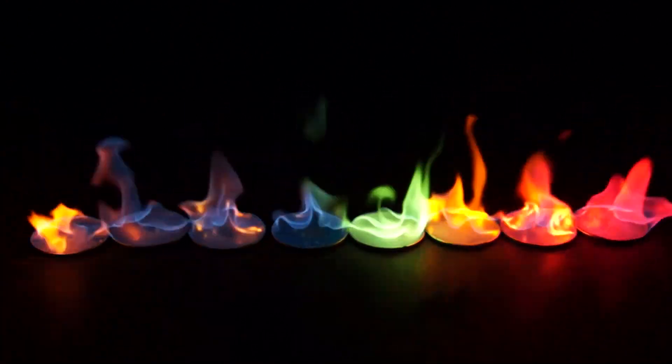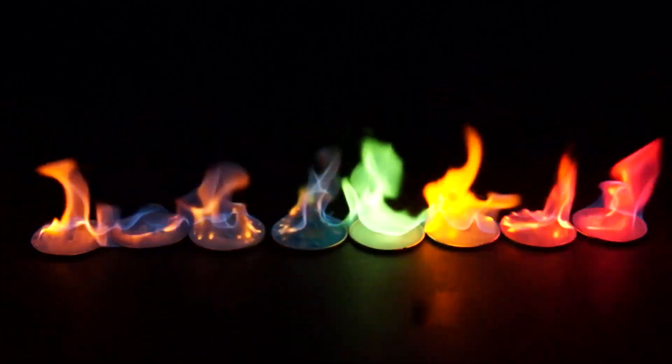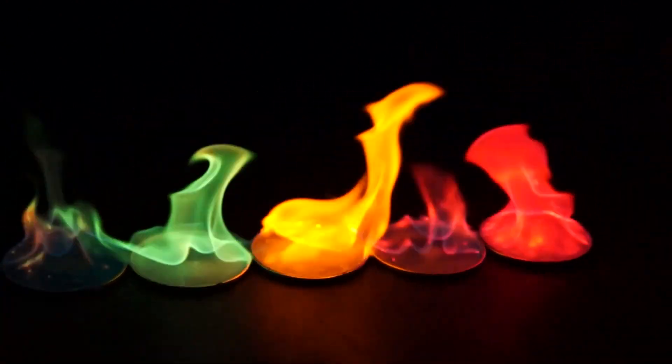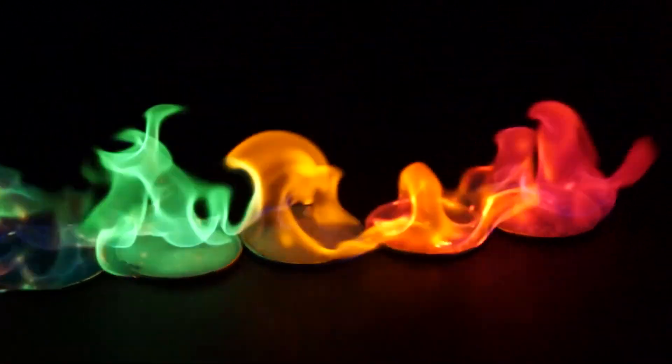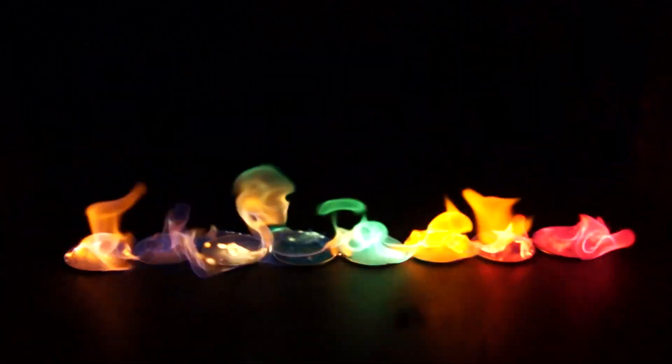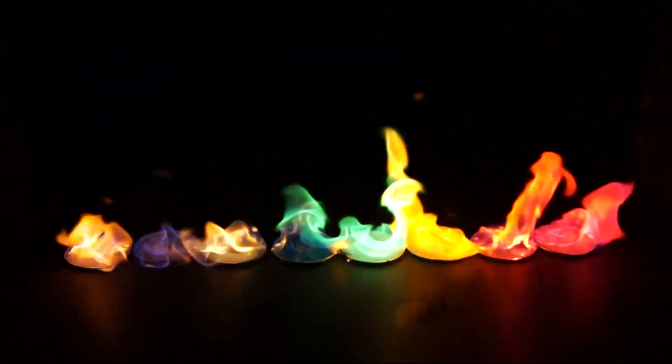Once the flames break out we get a fire rainbow. Lithium chloride paints flame in such a rich carmine red color. Strontium chloride paints the flame in a bright red color. Sodium chloride paints flame in yellow.